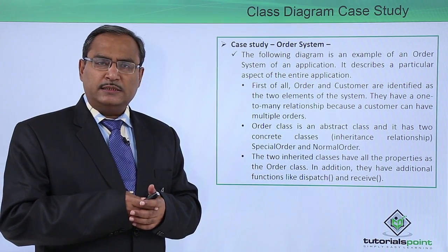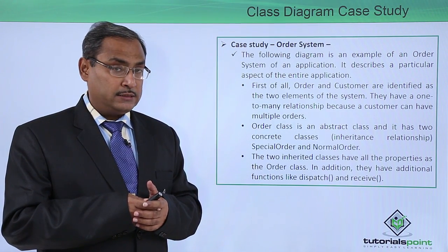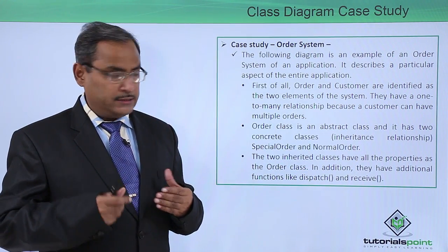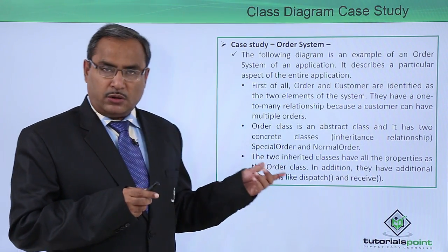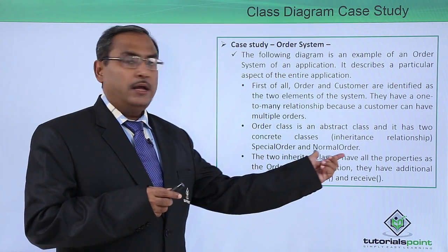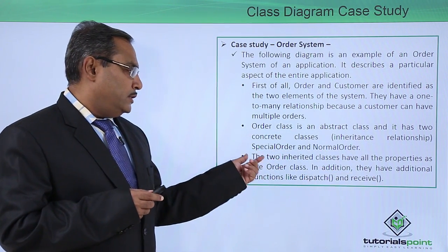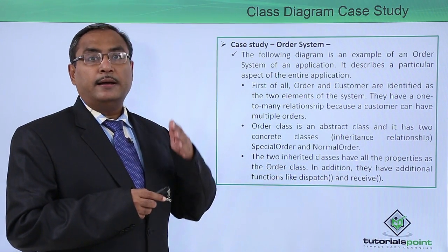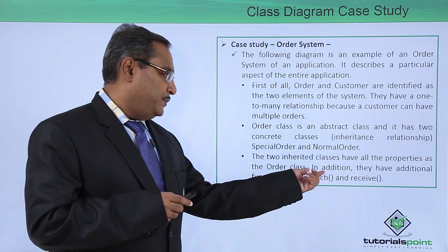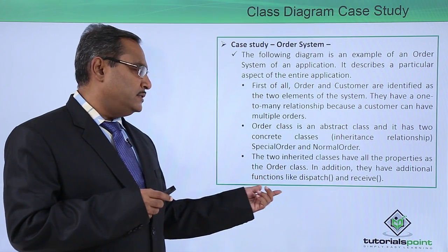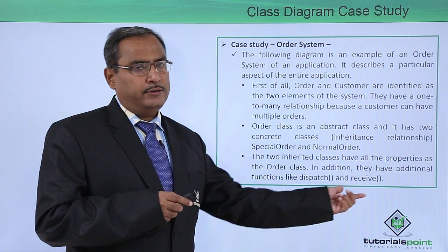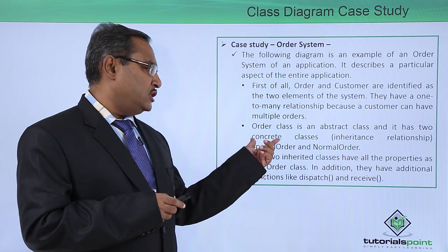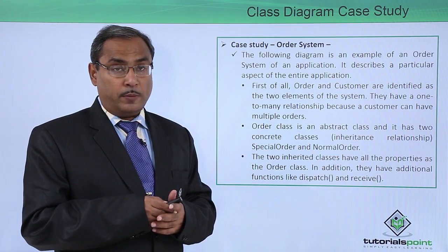An abstract class means we cannot directly define any object under that class. We have two concrete classes — Special Order and Normal Order — which are not inherited further. These two inherited classes have all the properties of the Order base class, and in addition they have extra functions like dispatch and receive, which are additional methods found under Special Order and Normal Order.